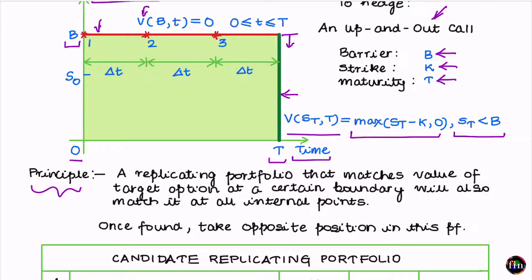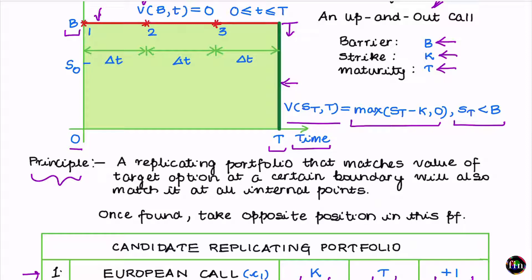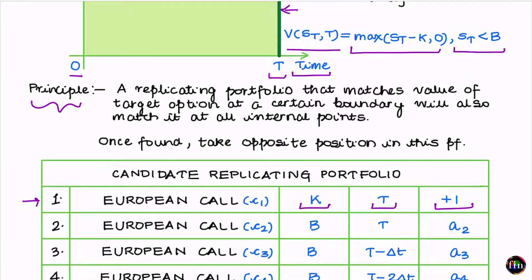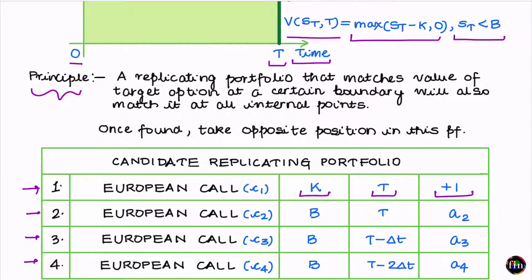I need to insert more options into my replicating portfolio to make its value go to zero when the stock price hits the red boundary. To do that, I divide the entire red boundary into three equal parts — three is just a convenient hypothetical choice. Since I have divided the boundary into three equal parts, I introduce three European call options into my replicating portfolio. These are options C2, C3, and C4, one corresponding to each of the three subdivisions of the red boundary. The first, C2, has strike equal to the barrier level B and maturity T.